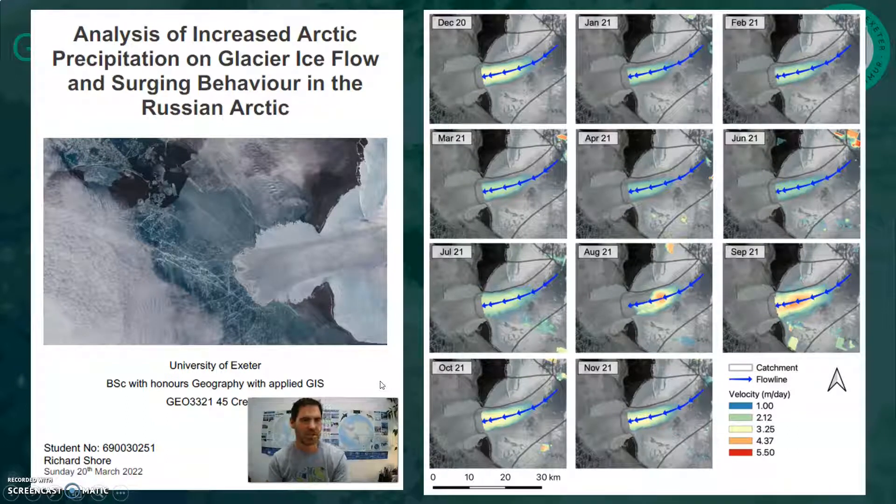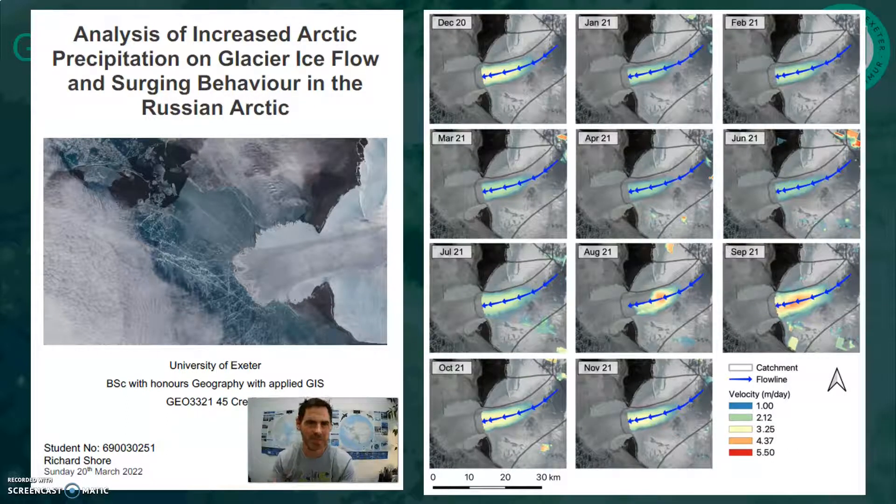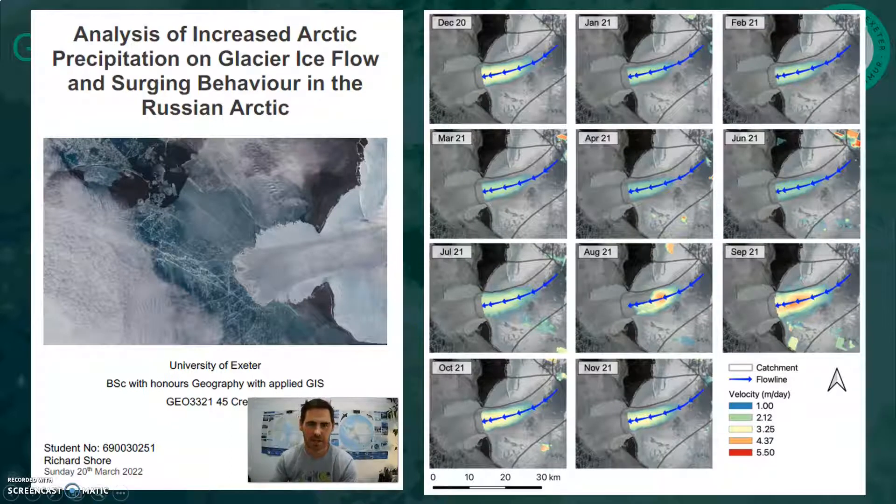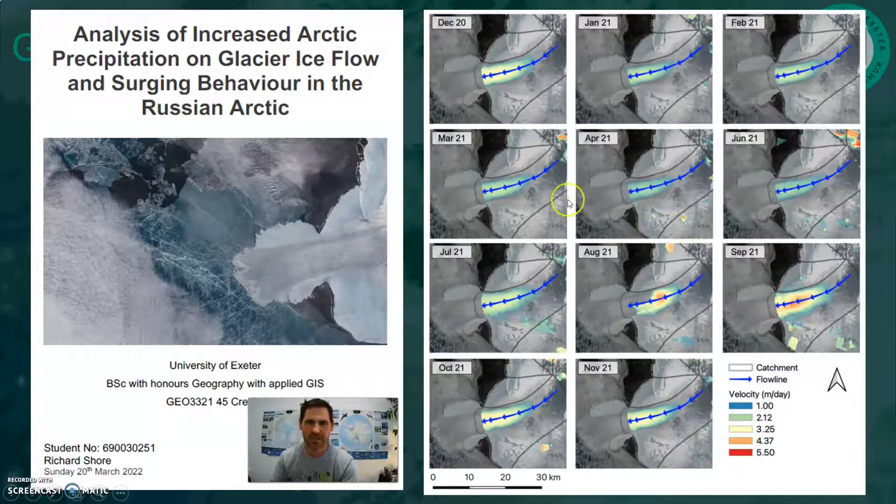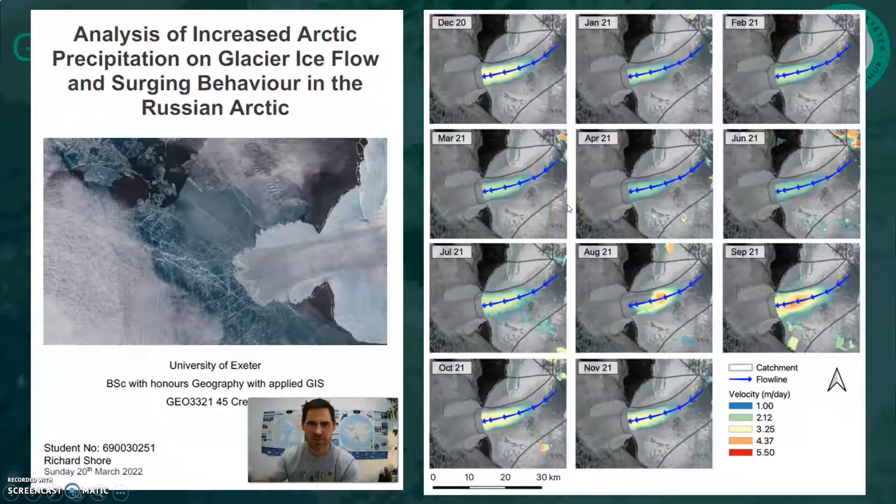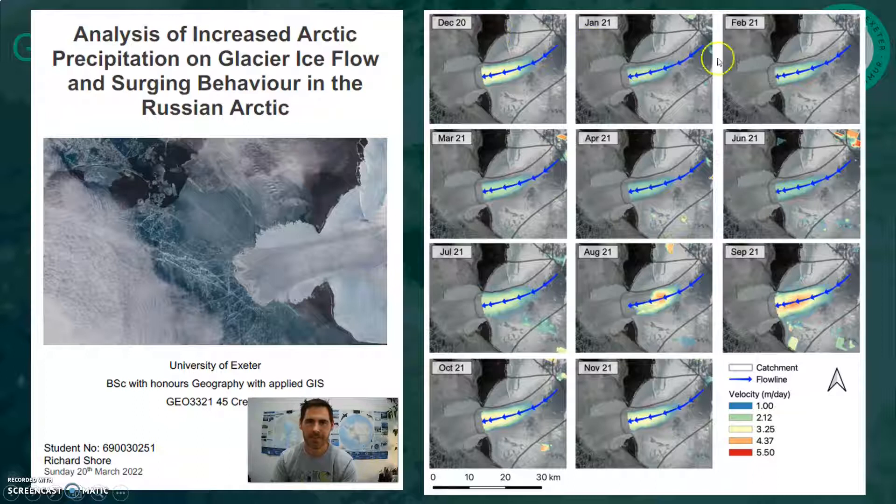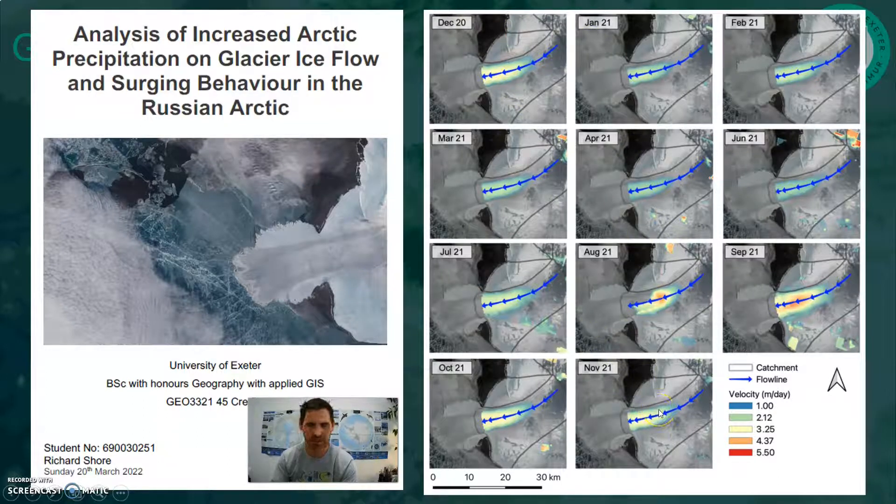So student Richard looking at Arctic precipitation on glacier flow and surging. And for each of these examples, I've just taken a figure to sort of showcase some of the things that these students were doing. So in this case, looking at the seasonal variability and the flow speed of this glacier.